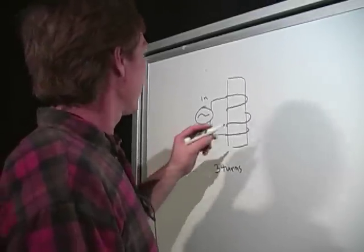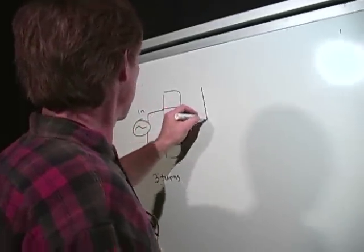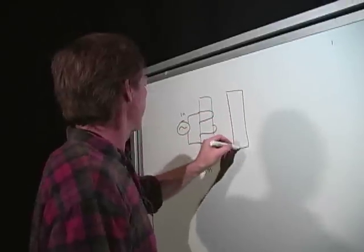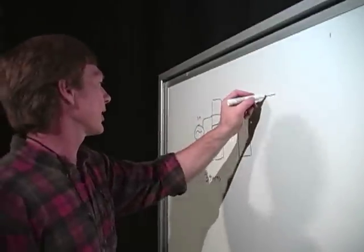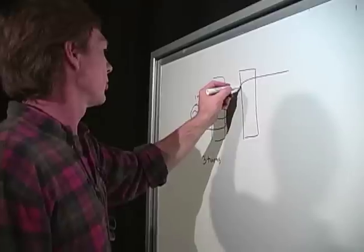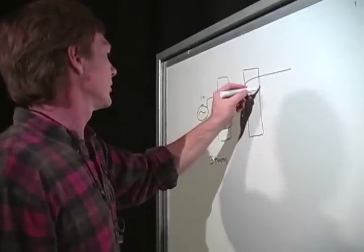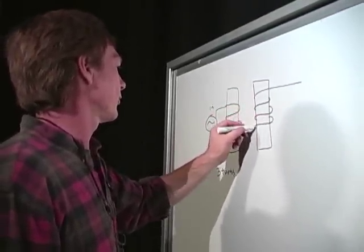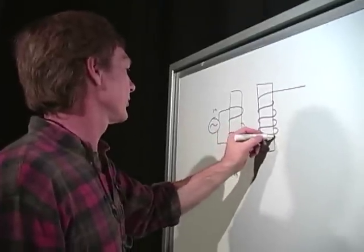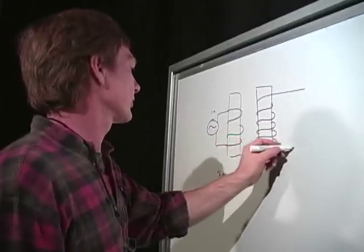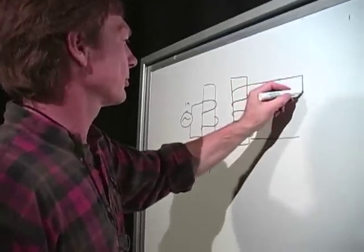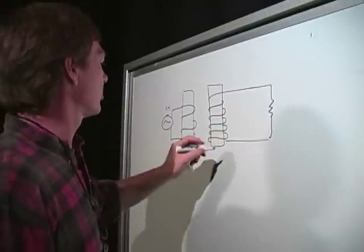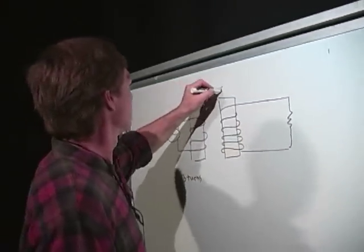OK. Now, let's say on the other side, I've got an output, and I've got one, two, three, four, five, six. Six turns, and it's going to be driving something on the output. So this is in. This is out.